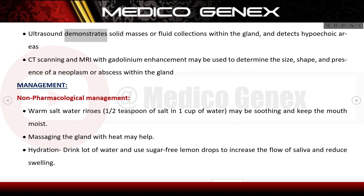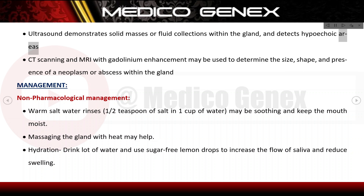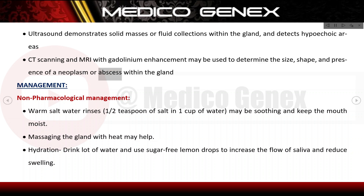Ultrasound demonstrates solid masses or fluid collections within the gland and detects hypoechoic areas. CT scanning and MRI with gadolinium enhancement may be used to determine the size, shape, and presence of a neoplasm or abscess within the gland.